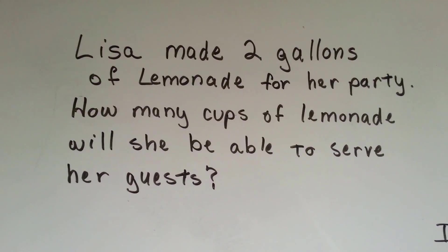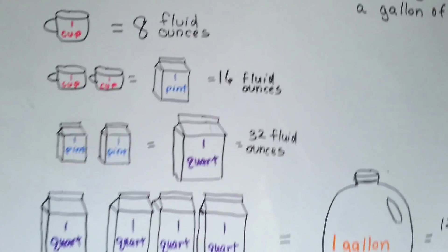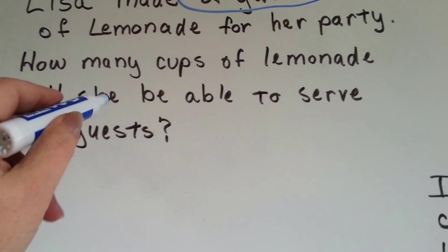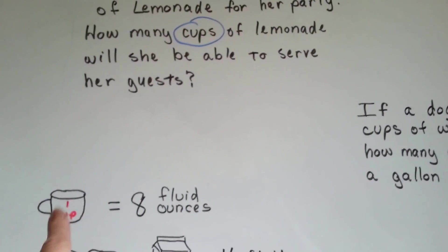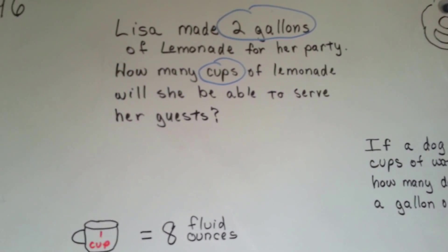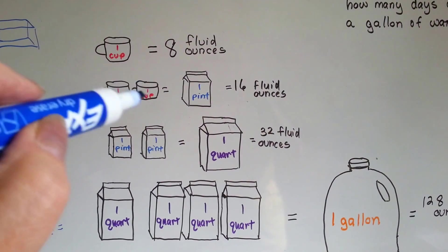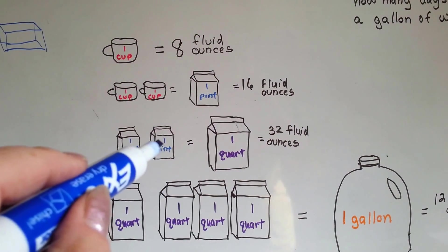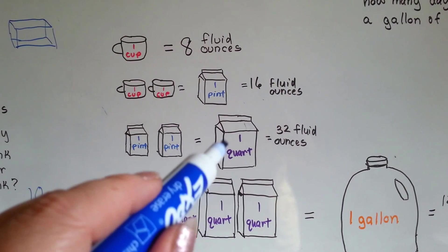Lisa made two gallons of lemonade for her party. How many cups of lemonade will she be able to serve to her guests? She made a total of two gallons. If she's going to serve it into eight-fluid-ounce cups, how many cups can she serve? We have to figure out how many cups are in two gallons. First, how many cups are in one gallon? There are two cups in a pint. Two cups and two cups equals one quart, so every quart is equal to four cups.